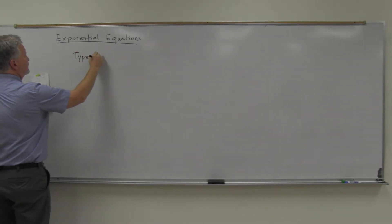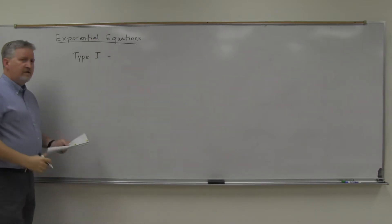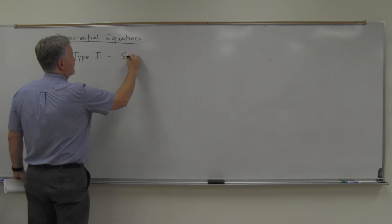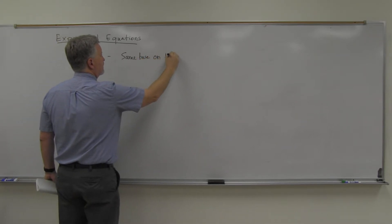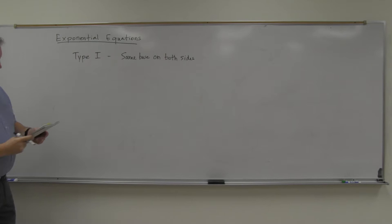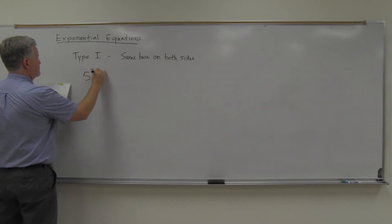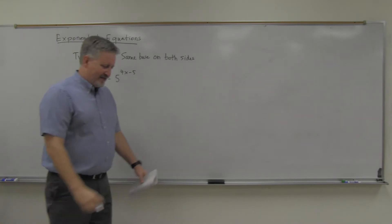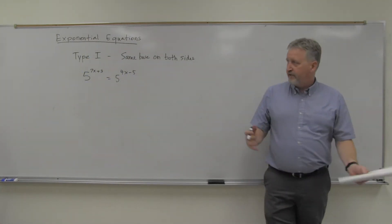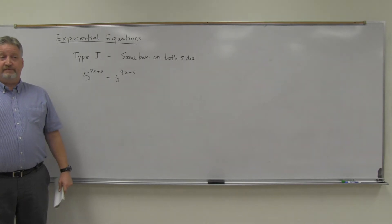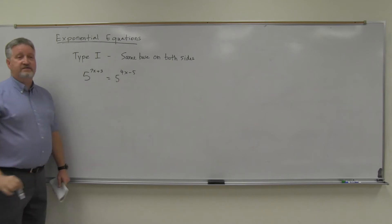So let's call these type 1 exponential equations, and the distinguishing mark on the type 1, what I call type 1, is that the exponential equation has the same base on both sides. A good example is 5 to the 7x plus 3 equals 5 to the 4x minus 5, and so this is going to be an extremely simple example here, but it makes the point anyway. So I've got, what makes this an exponential equation? Well, remember, exponentials are ones that have x in the exponent, and so that's what we're, for exponential equations, we're talking about those equations that have x in the exponent.